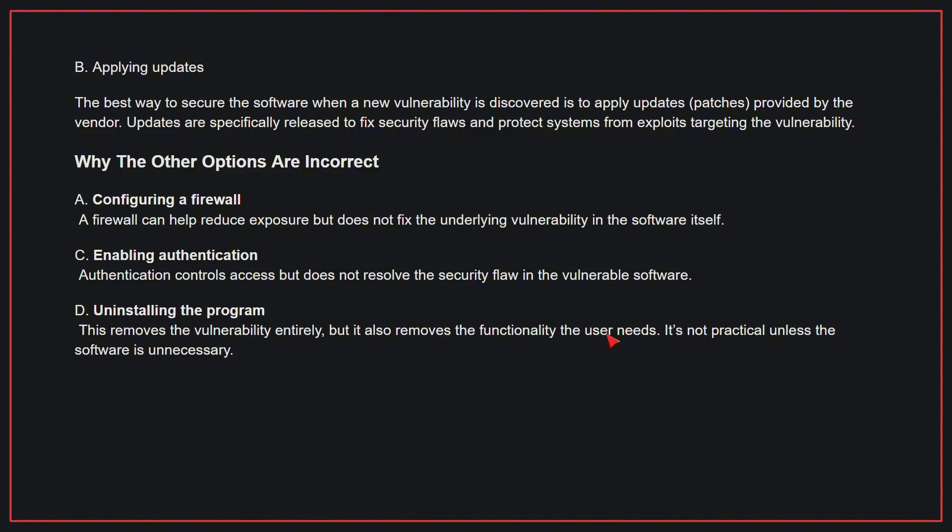Why the other options are incorrect: A, configuring a firewall — a firewall can help reduce exposure but does not fix the underlying vulnerability in the software itself. C, enabling authentication — authentication controls access but does not resolve the security flaw in the vulnerable software. D, uninstalling the program — this removes the vulnerability entirely, but it also removes the functionality the user needs. It's not practical unless the software is unnecessary. Therefore, the correct answer is B.